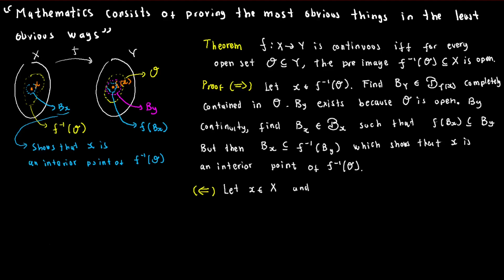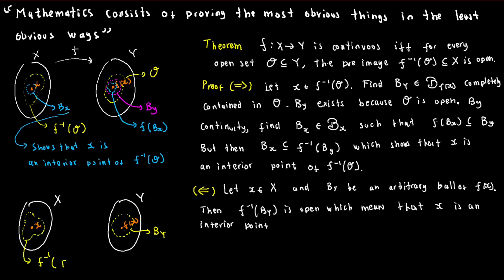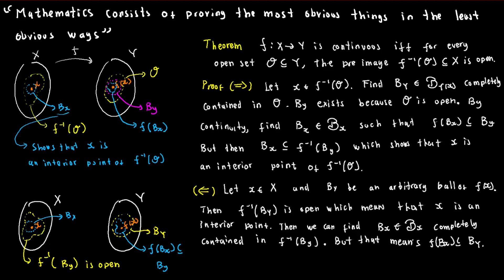To prove the other direction, for a given point x in X, pick an arbitrary open ball B_y around f(x). By the premise, x is an interior point of the preimage of B_y, and therefore we can find an open ball B_x around x that is completely contained in the preimage of B_y. From that, we conclude that f(B_x) is contained in B_y, which is the original definition of continuity.